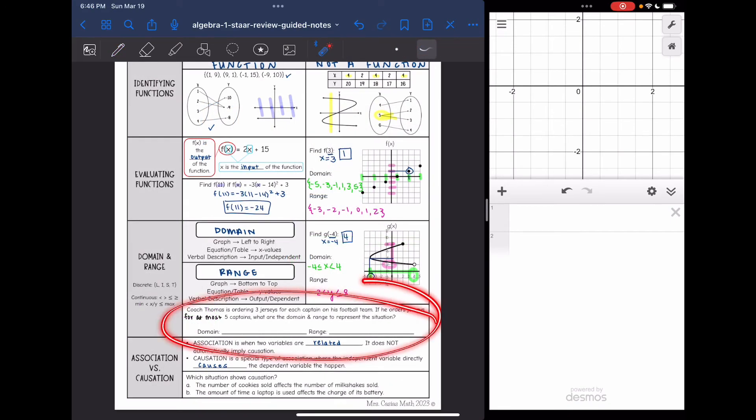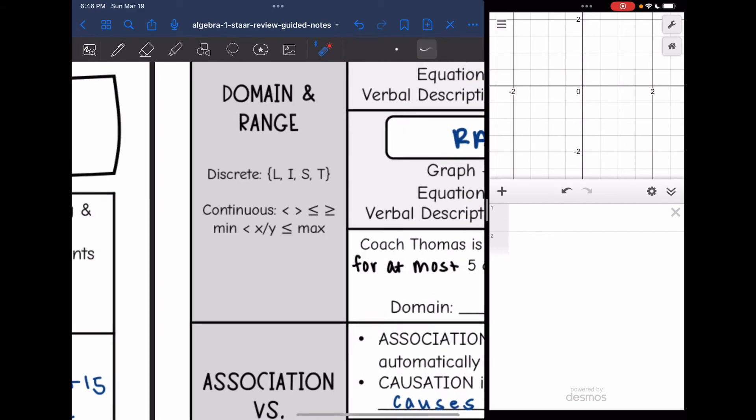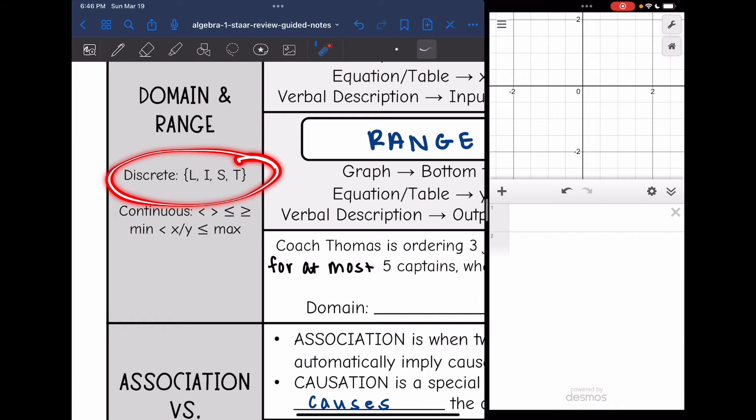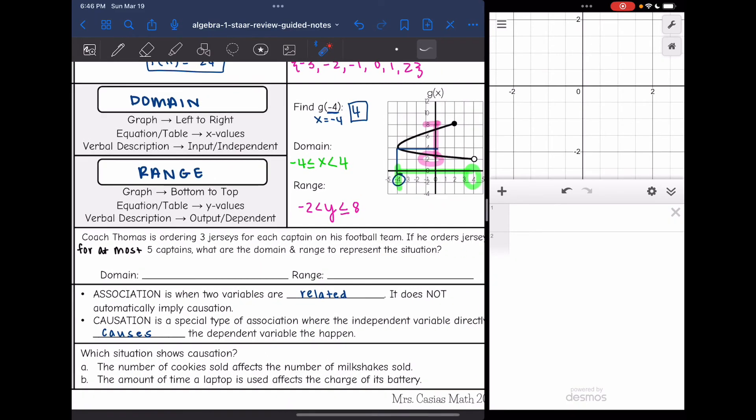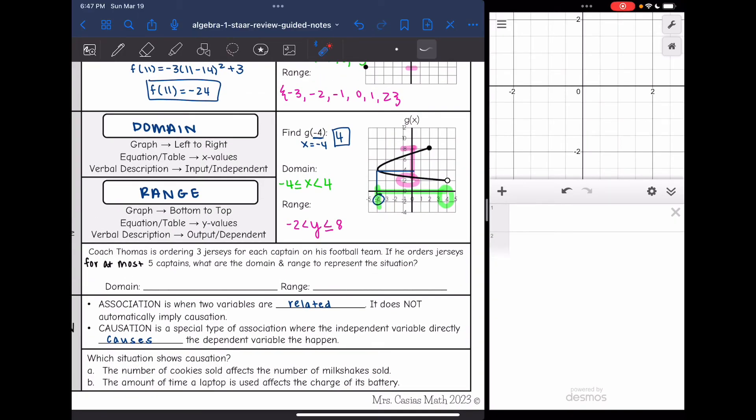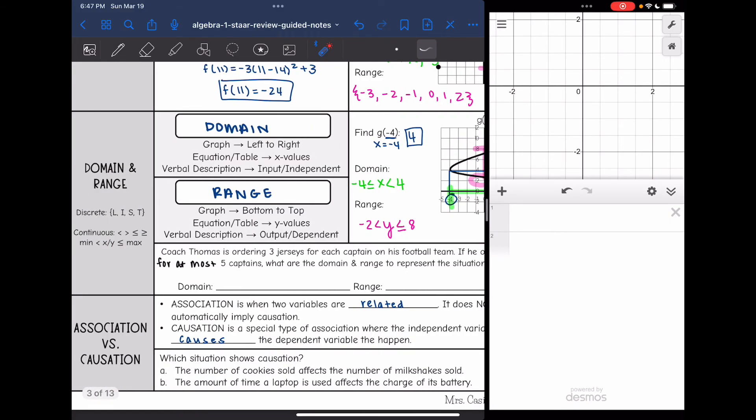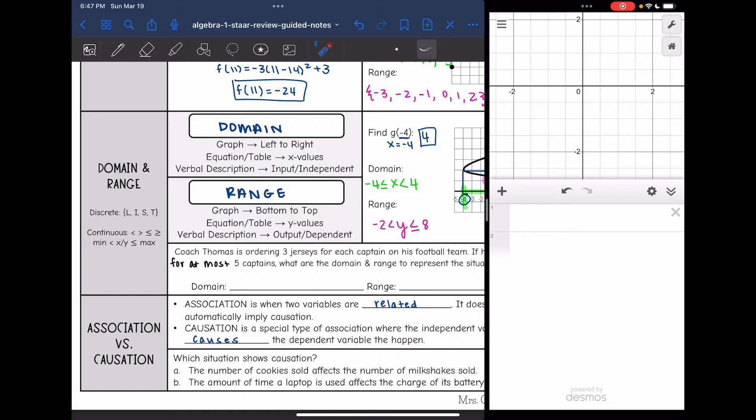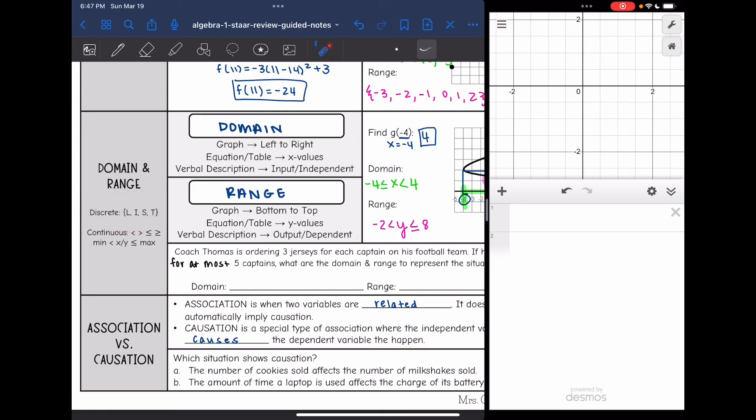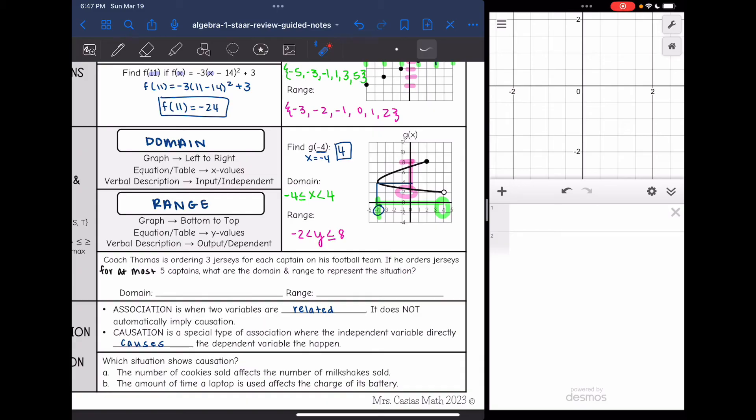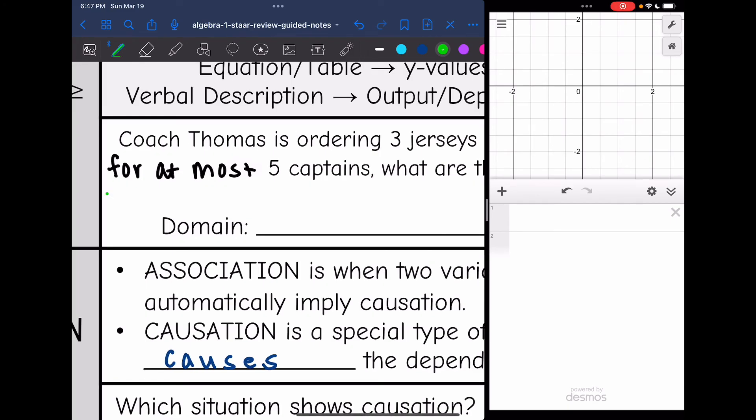Let's look at the word problem down here. So while I'm reading through the word problem, I want you to think about if it is a discrete situation where the numbers in between would not be true, or if it's continuous where everything in between a certain range is going to be true. So it says, Coach Thomas is ordering three jerseys for each captain on his football team. If he orders for at most five captains, what are the domain and range to represent this situation? So since he's ordering jerseys for at most five captains, that is going to be discrete because he's not going to order like 1.25 jerseys. He will only order one or two or three or so on. So we are going to list out the domain and range here.